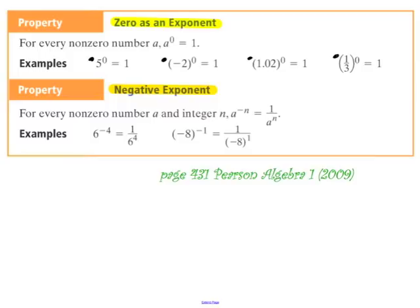Imagine 6 to the negative 4 as a fraction over 1. We have to correct this negative exponent — the negative exponent property tells us to rewrite 6 to the negative 4 as 1 over 6 to the 4. Notice the exponent is negative in the numerator, and when I move it to the denominator, it becomes positive. Similarly, negative 8 to the negative 1 equals 1 over negative 8 to the 1.